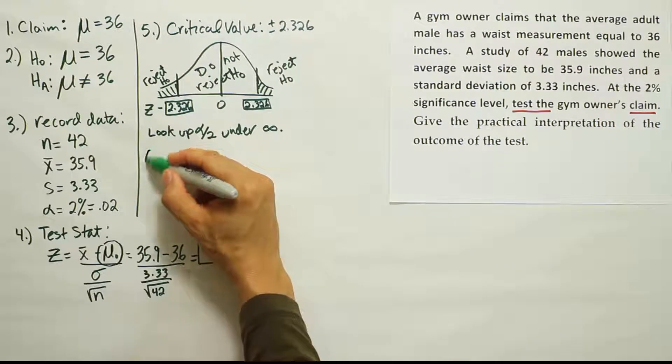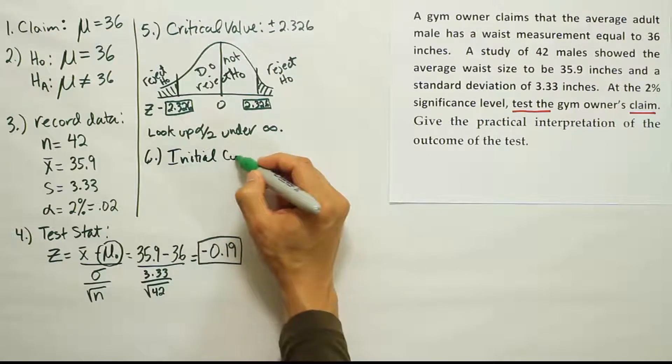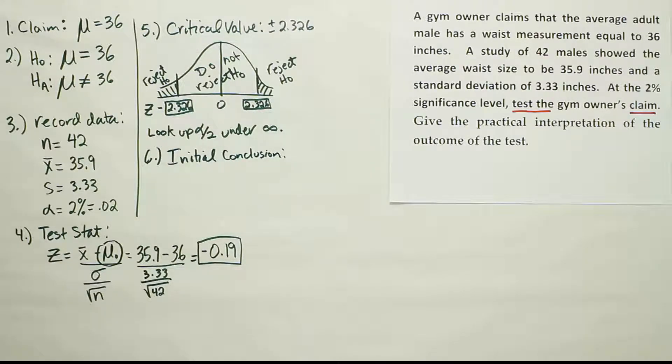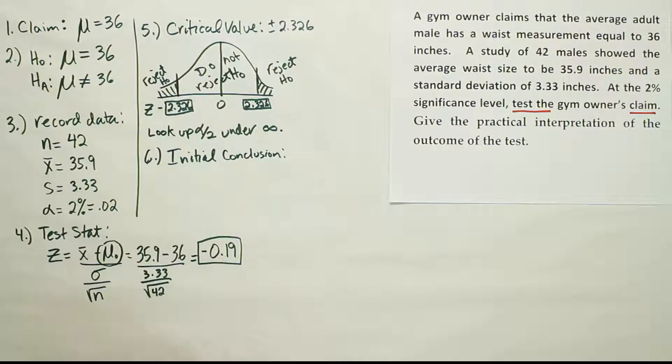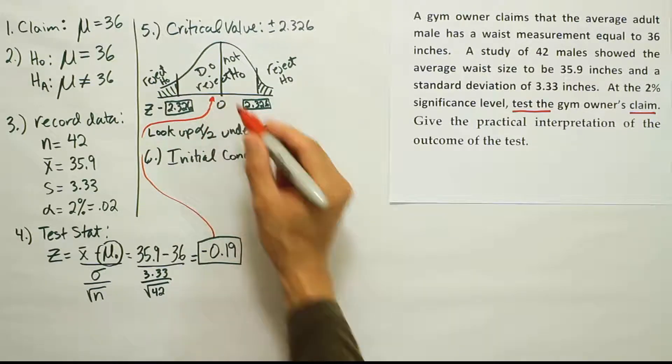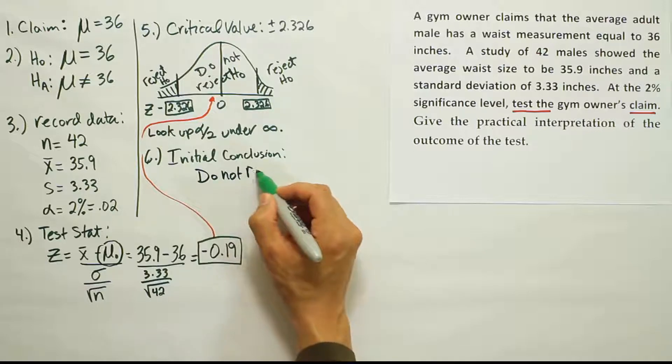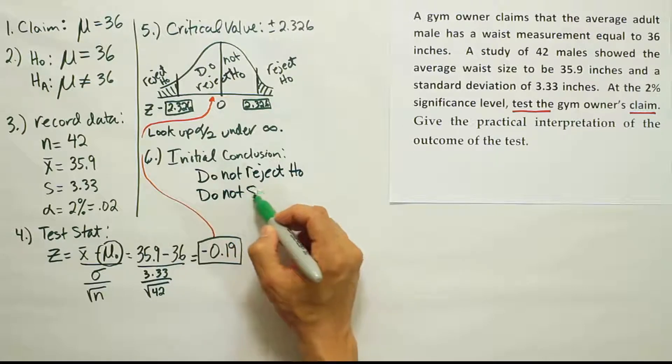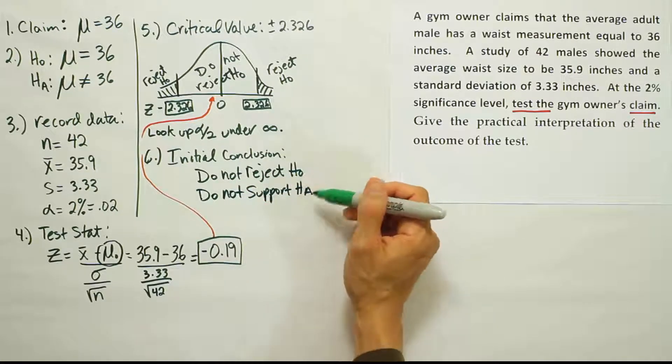Okay, now we do our step six. Our step six is to form the initial conclusion, right? Initial conclusion. So our initial conclusion is going to be based on where our test stat lands on the curve above, along the number line, right? Now this number, minus 0.19, is very, very close to zero, a little bit on the left of zero, basically, right? So it's around here, and that's clearly in the do not reject H0 area. So we're going to say, do not reject H0. That leads to the idea that we are not going to support. So do not support HA. Remember, these go hand in hand. If you don't reject, you don't support.